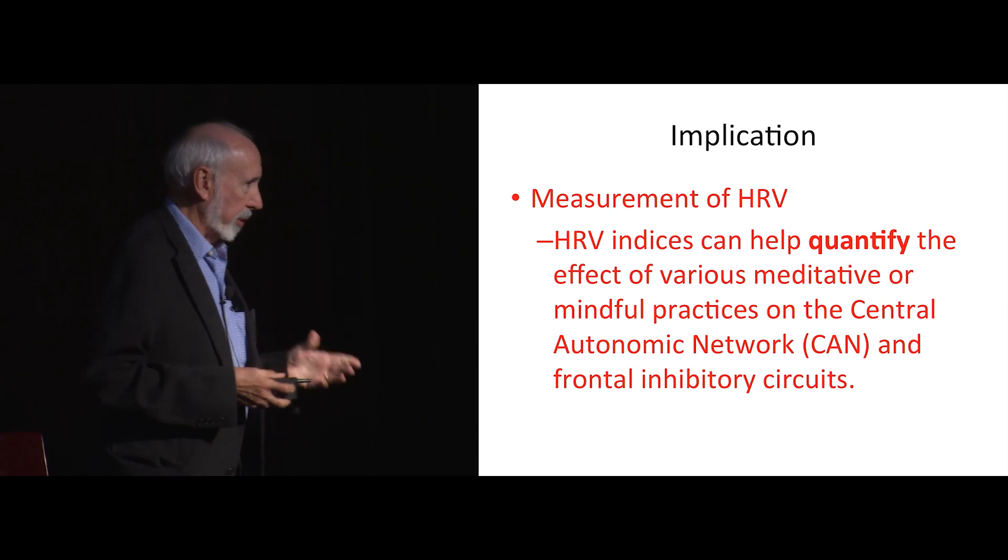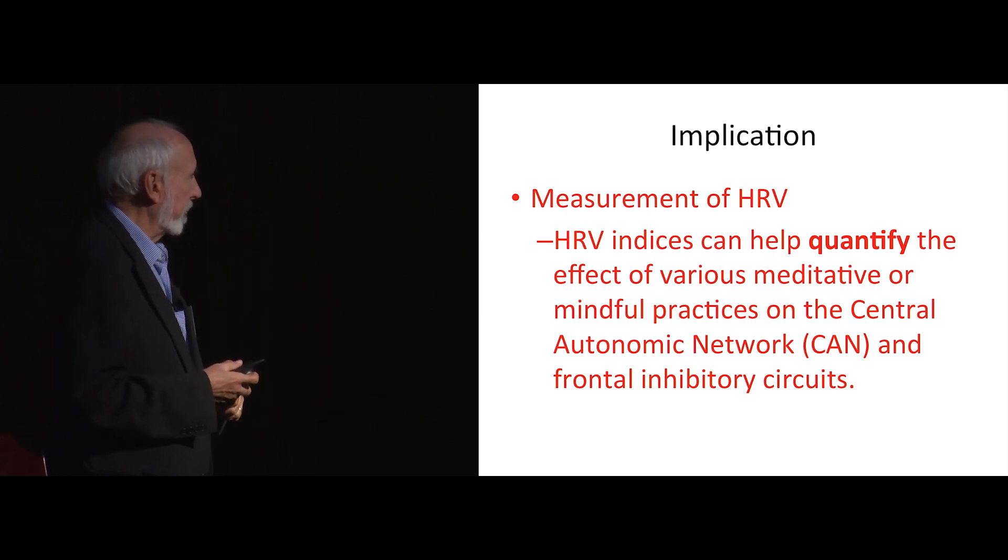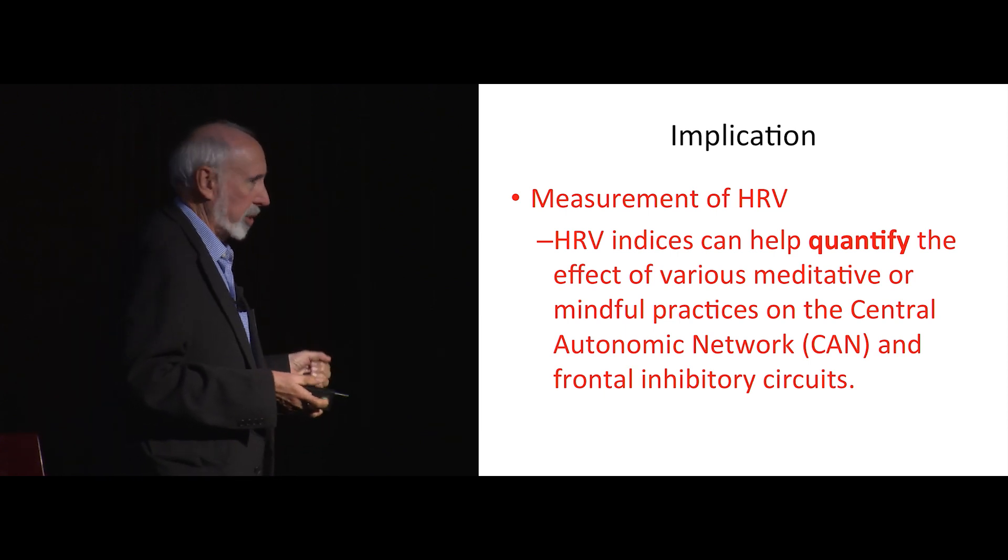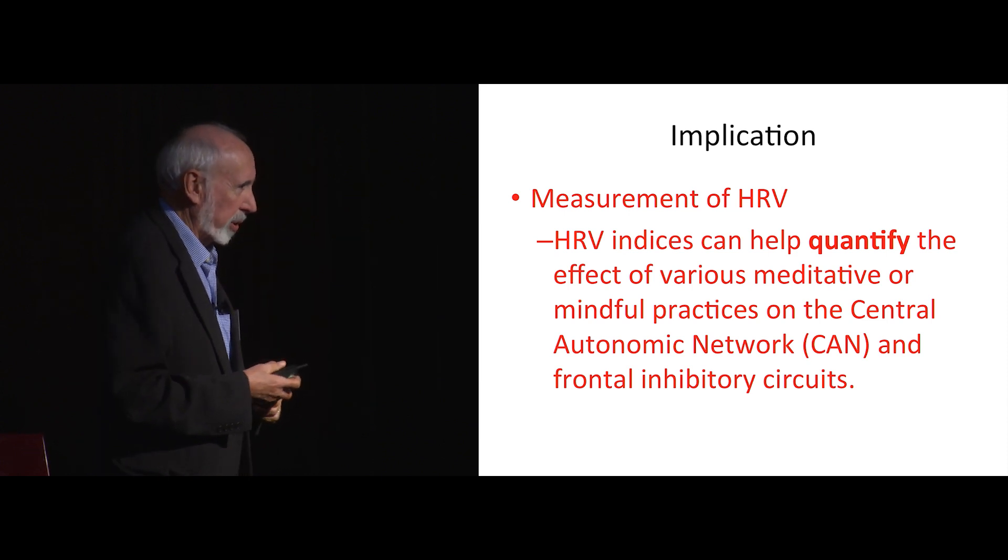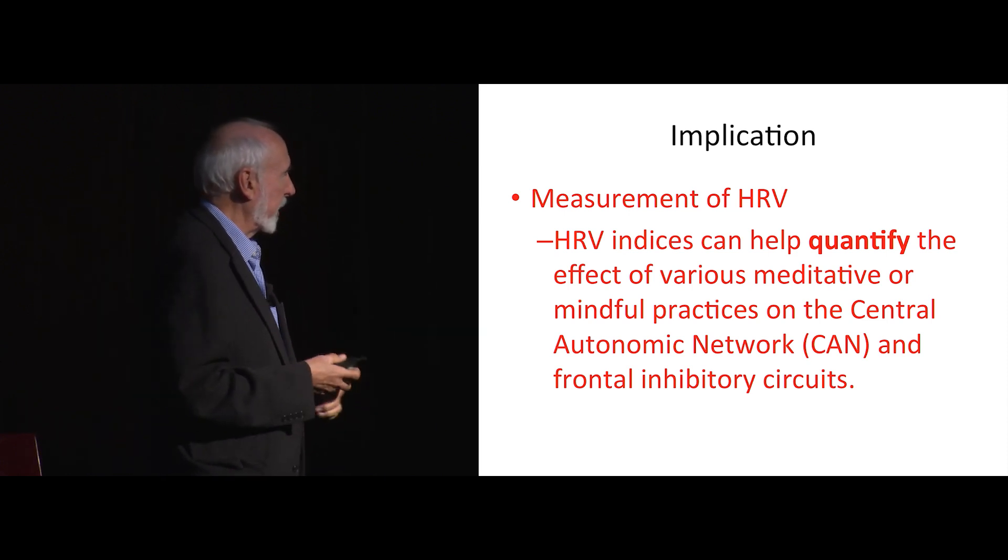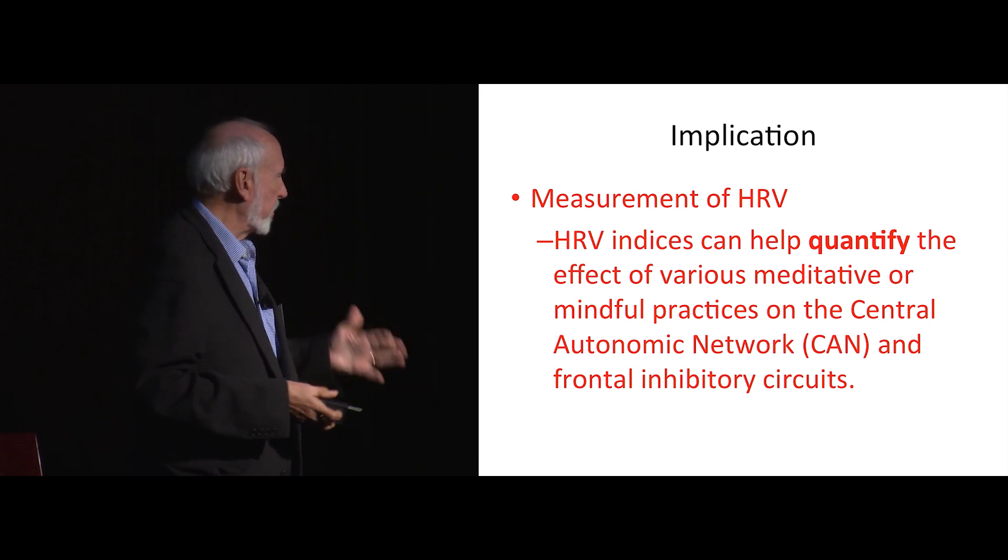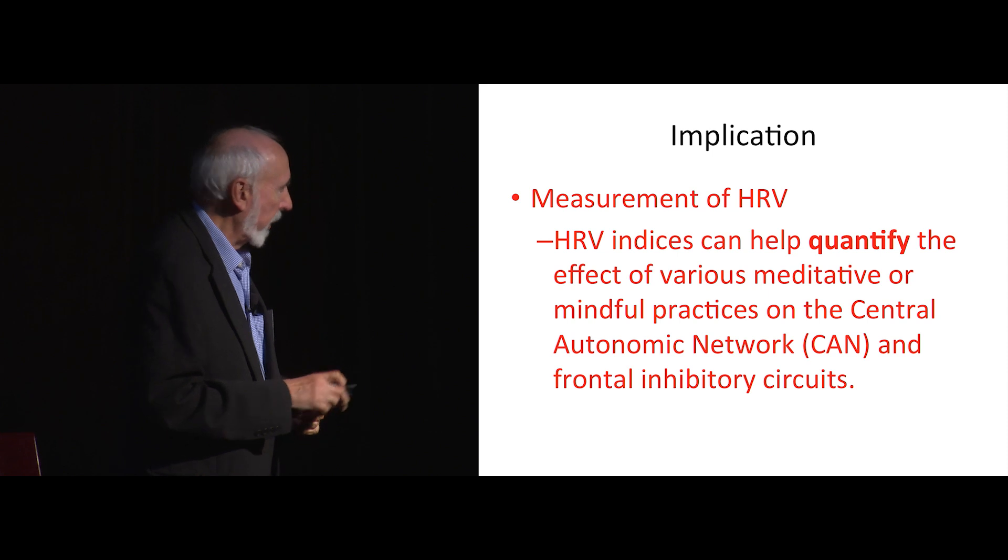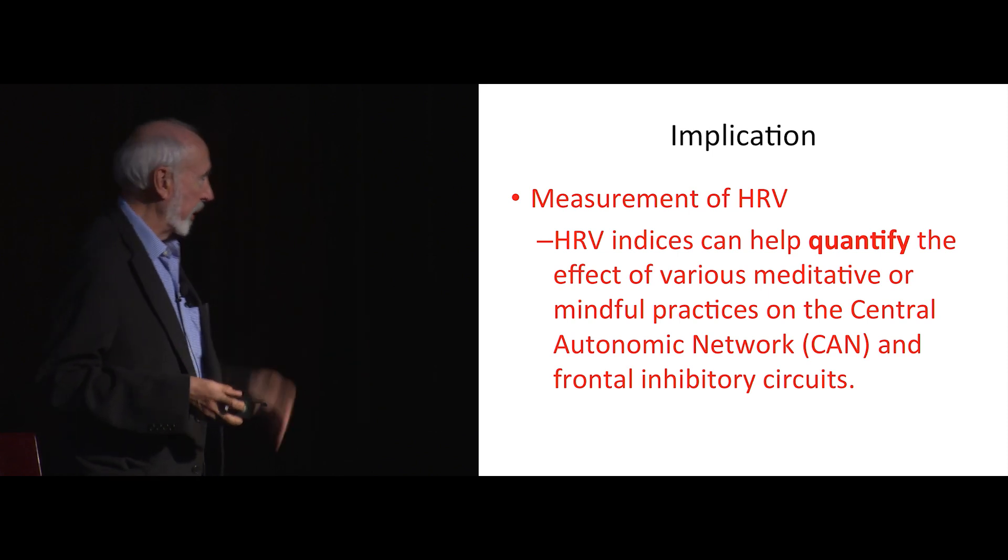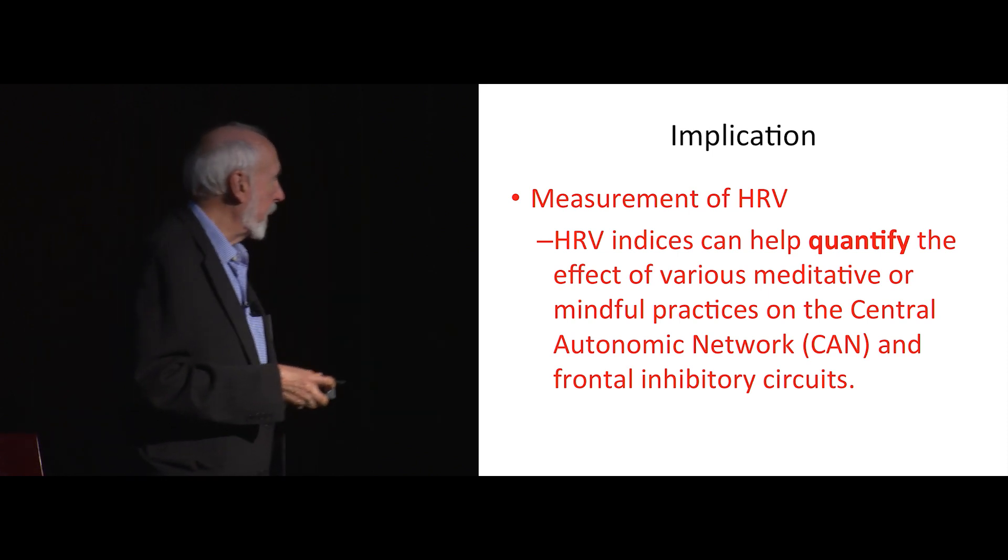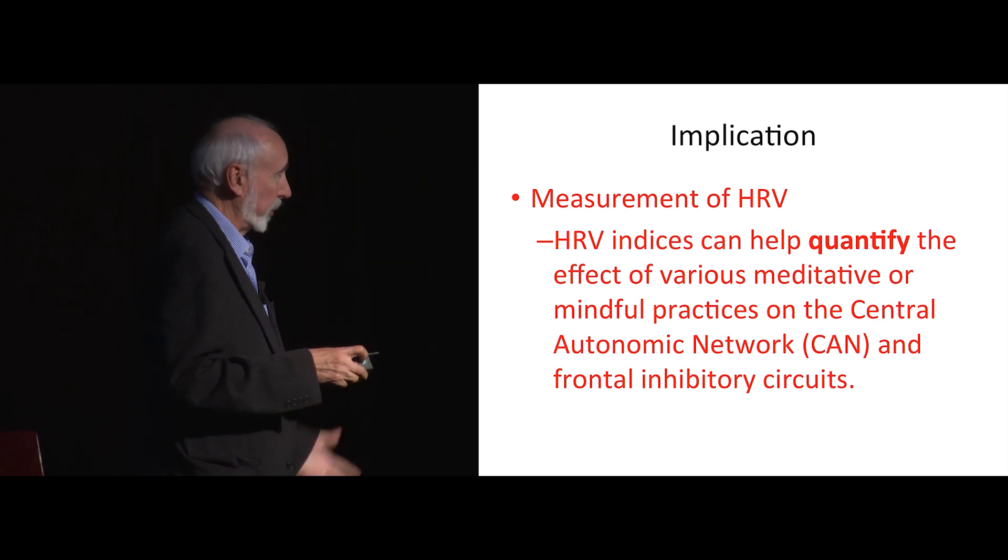So if you put those together, you can look at the implications for transformative technology as this is a powerful measure of a really important part of our physiology, our autonomic nervous system, which can be really used well to kind of trace different kinds of frontal functions, which I think almost all of us are really interested in here. And so the measurement of heart rate variability has become incredibly powerful and incredibly frequently used.